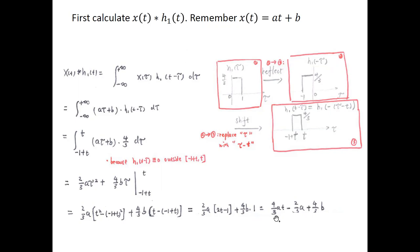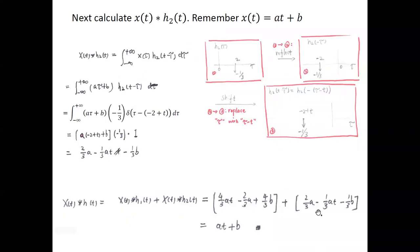The result of x convolved with h1 is a linear function of t with coefficient (4/3)a and a constant term involving a and b. For h2, it is an impulse occurring at τ=2 with negative value −1/3. We do the same trick: first reflect so the impulse occurs at −2, then shift by t so it occurs at (−2+t). This is h2(t−τ).